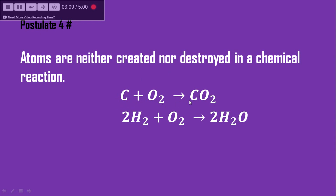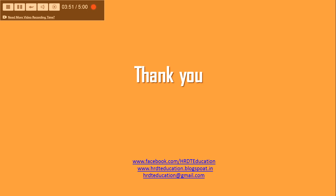In the first reaction, carbon reacts with oxygen to form carbon dioxide. There is one atom of carbon on the reactant side and one on the product side; two atoms of oxygen on the reactant side and two on the product side — nothing is created, nothing is destroyed, only rearrangement occurs. Similarly, in the second reaction, hydrogen and oxygen combine to form water: four hydrogen atoms on each side and two oxygen atoms on each side. Atoms are neither created nor destroyed — they only rearrange.